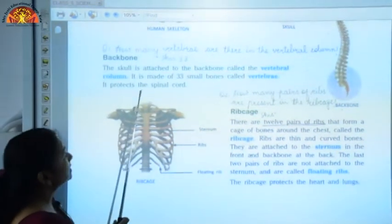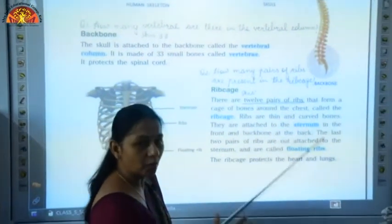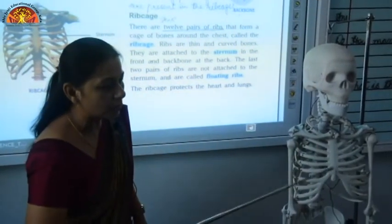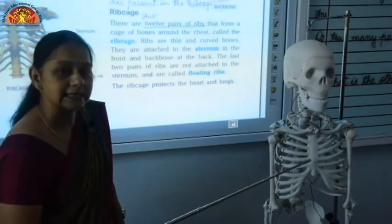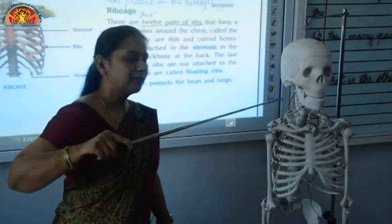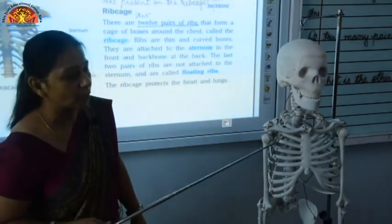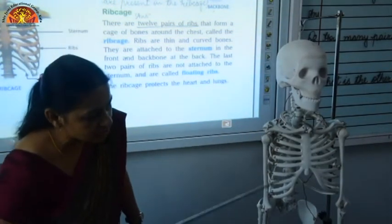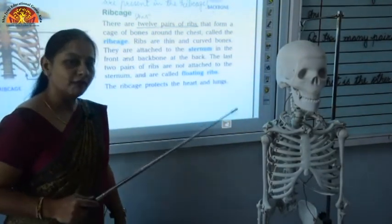The next topic is the ribcage. The ribcage is a cage of bones made up of curved bones which are attached to a small bone in the front called the sternum. At the back they curve and are attached to the vertebral column. There are 12 pairs of ribs, and 2 pairs of ribs are not attached to the sternum in front — these are called the floating ribs.